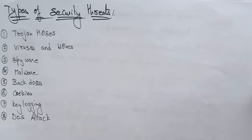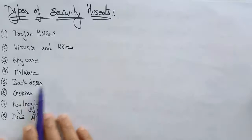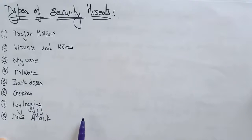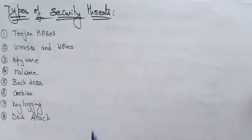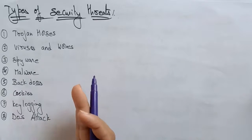The different types of security threats are Trojan horses, viruses and worms, spyware, malware, backdoors, cookies, keylogging, DoS attacks, and still so many more. These are some of the main threats that occur while you're working on the internet.